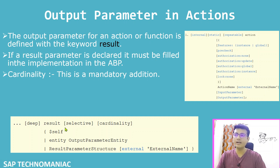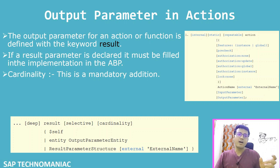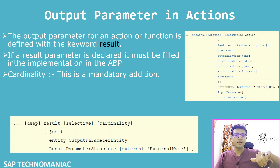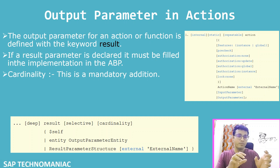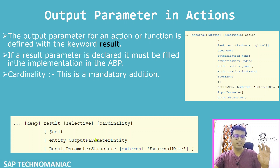When we define the output parameter, we have to use the 'result' keyword to indicate that you have some output parameter. After the result keyword, whatever type you are using will be filled into the internal table. We have to pass that internal table as a result. When we write code in the behavior pool, we fill that result table using our code and return that result parameter.